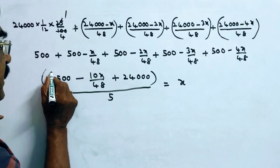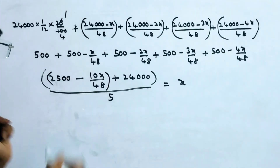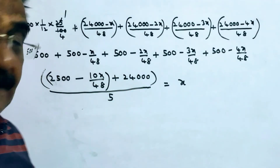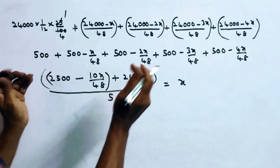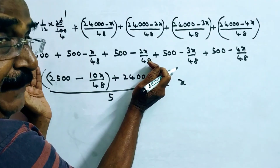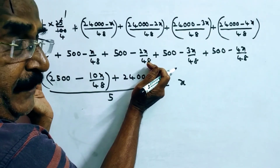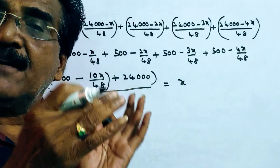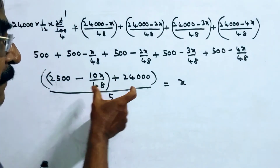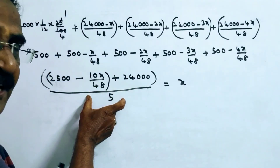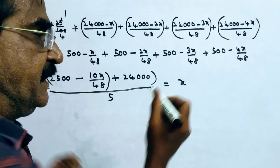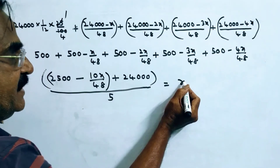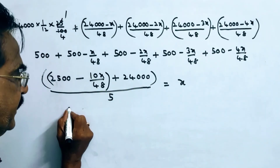This total interest plus the principal of 24,000 gives the total amount payable by him. He wants to pay this total amount in five installments, so dividing by 5 gives the monthly installment X. Therefore, 5X + 10X/48 equals the total amount.